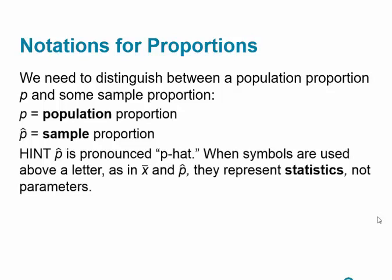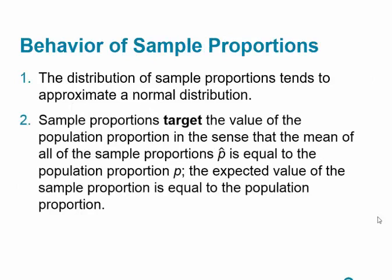Remember: population values are parameters; sample values are statistics. Regarding the behavior of sample proportions, the distribution of sample proportions tends to approximate a normal distribution. Sample proportions target the value of the population proportion in the sense that the mean of all the sample proportions p-hat is equal to the population proportion P. The expected value of the sample proportion equals the population proportion.